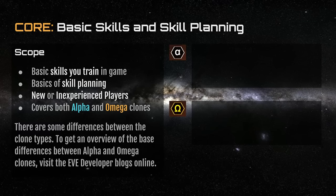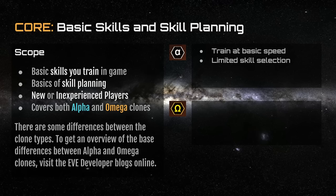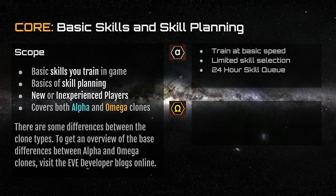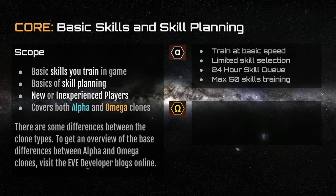Alpha clones, as opposed to Omega clones, train at a basic speed. They have a limited skill selection, which limits the ships and weapons they can access, and they have a 24-hour skill queue. For example, if you had three skills that take seven hours each and one skill that takes four hours, you could fit all four in even though they add up to 25 hours, because you began all of them within a 24-hour period. You could not, however, add another skill on top. You may also only have a maximum of 50 skills training at any time.